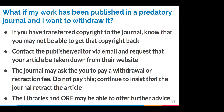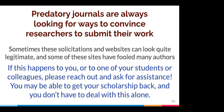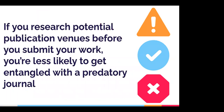If you've submitted a manuscript and want to withdraw it before publication, keep a record of all emails with the journal. Via email, insist that you must withdraw your article. They may ask you to pay a charge, saying they've put so much work into your article. Stand firm — don't pay them, and definitely don't sign anything with them. The Office of Research and Engagement may be able to offer further advice. If it's already been published in a questionable journal, it gets more difficult. If you've transferred copyright, you may not be able to get the paper back, but contact the publisher and request your article be taken down. Don't pay any withdrawal or retraction fee.